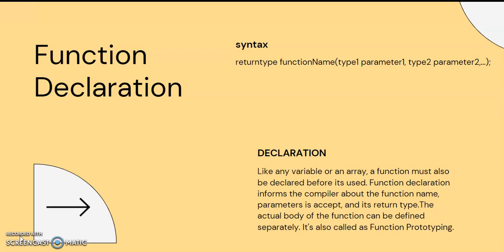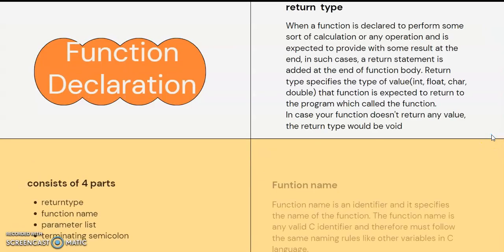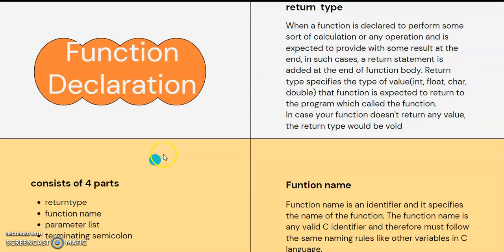We will discuss the function declaration. A function performs a particular task. The function declaration has 4 parts: return type, function name, parameter list, and a terminating semicolon.